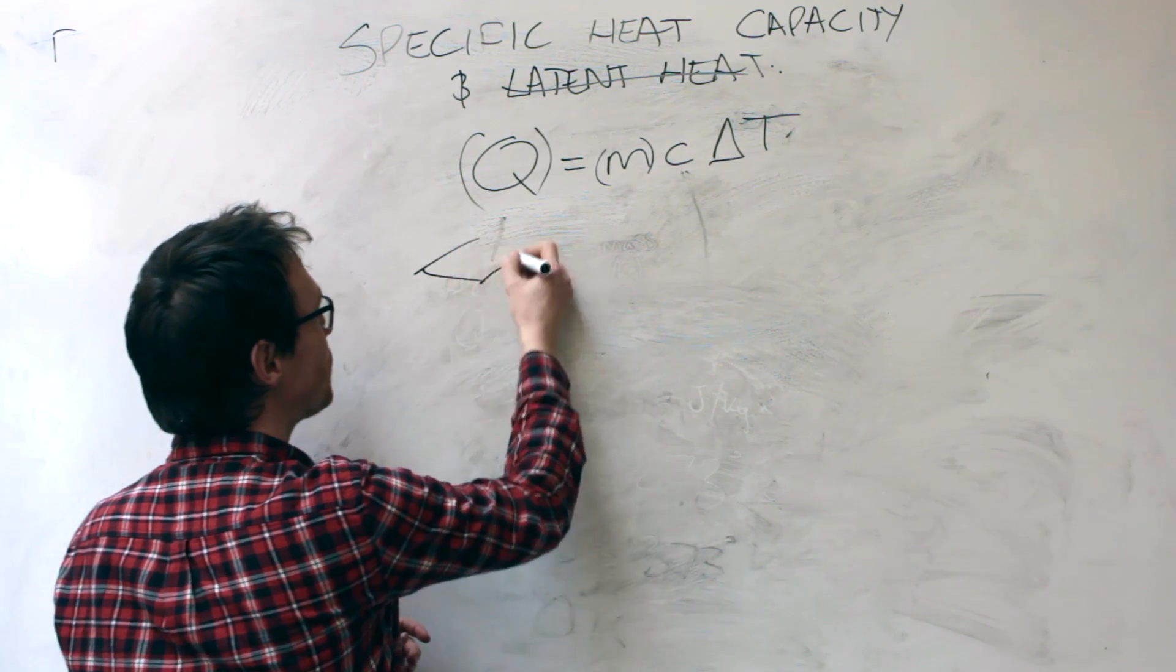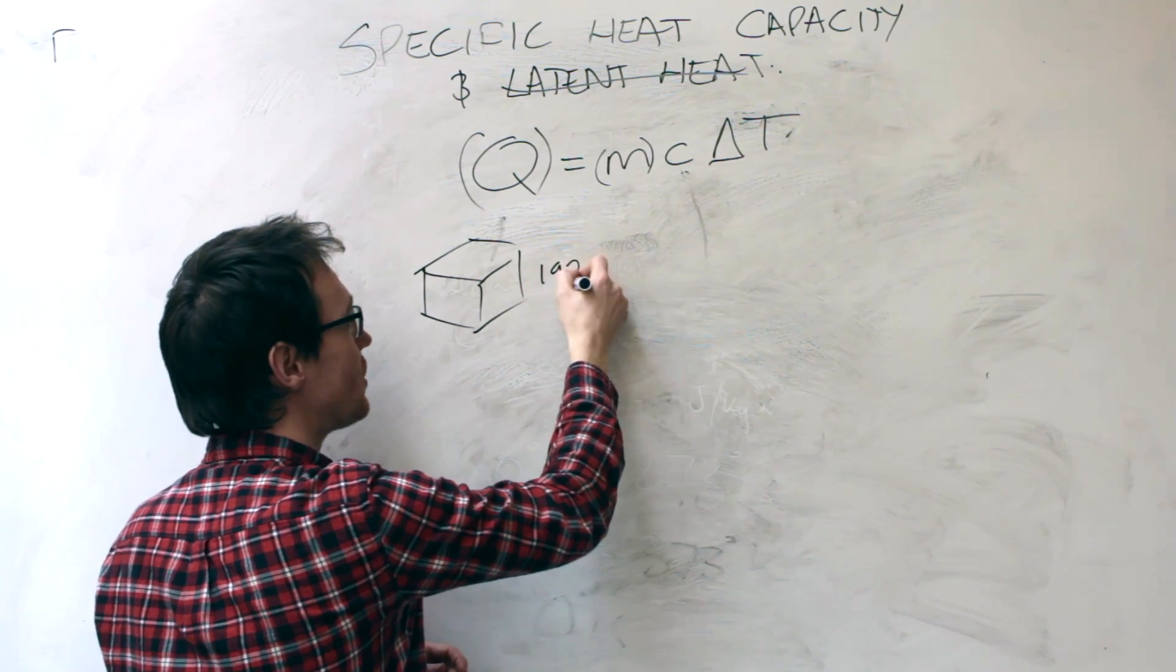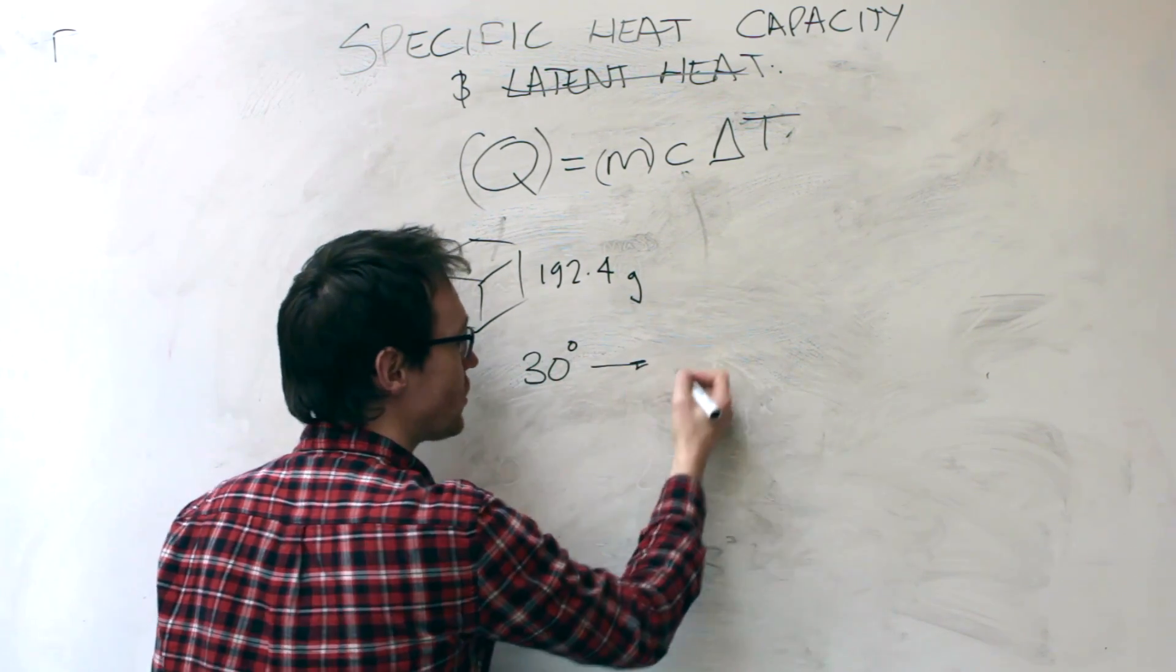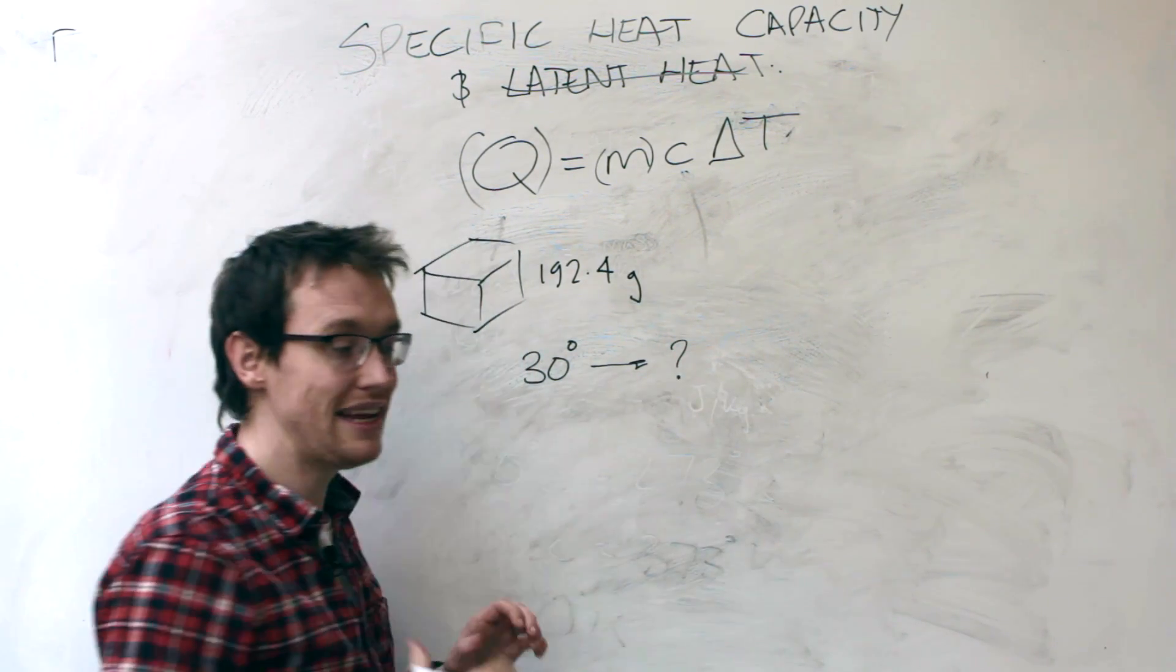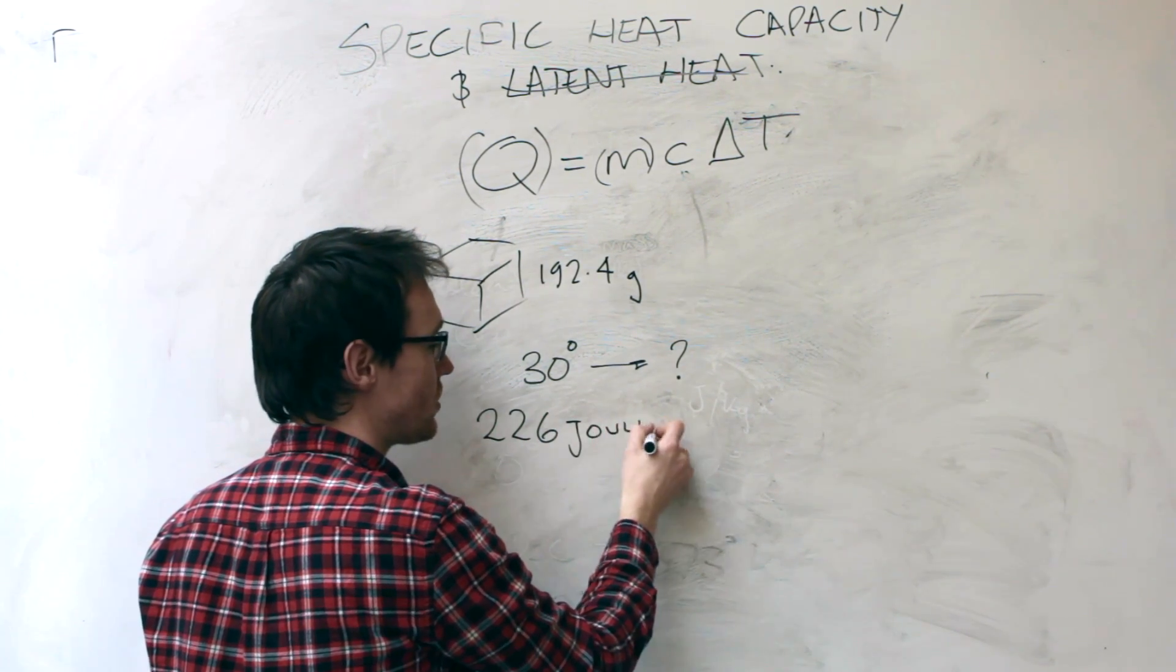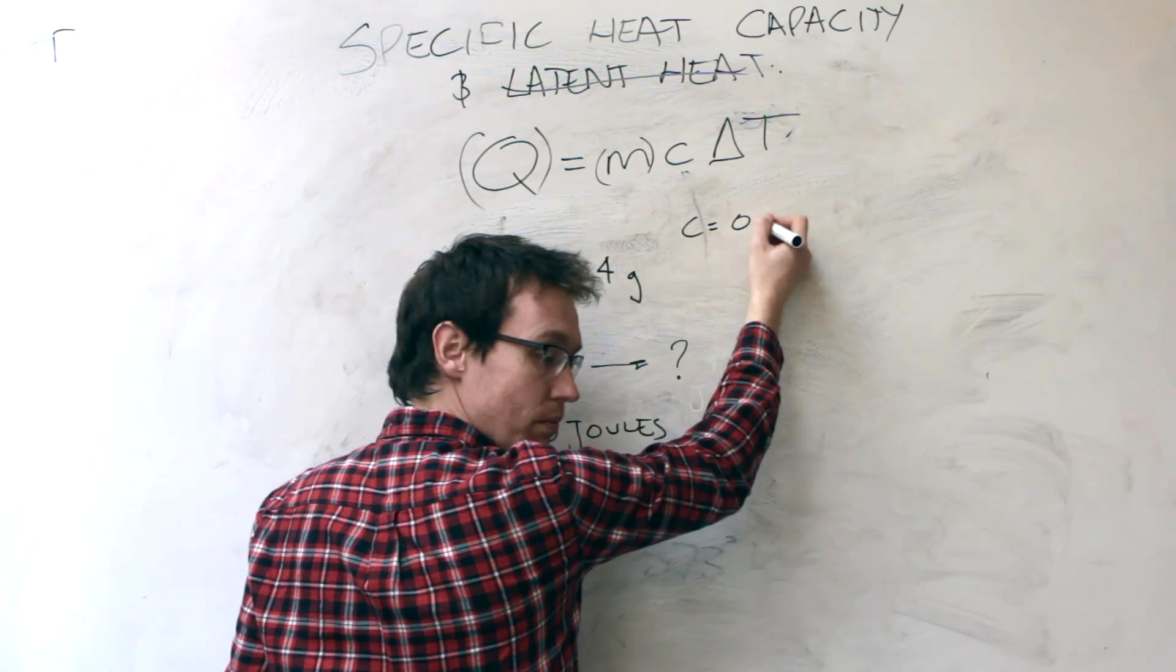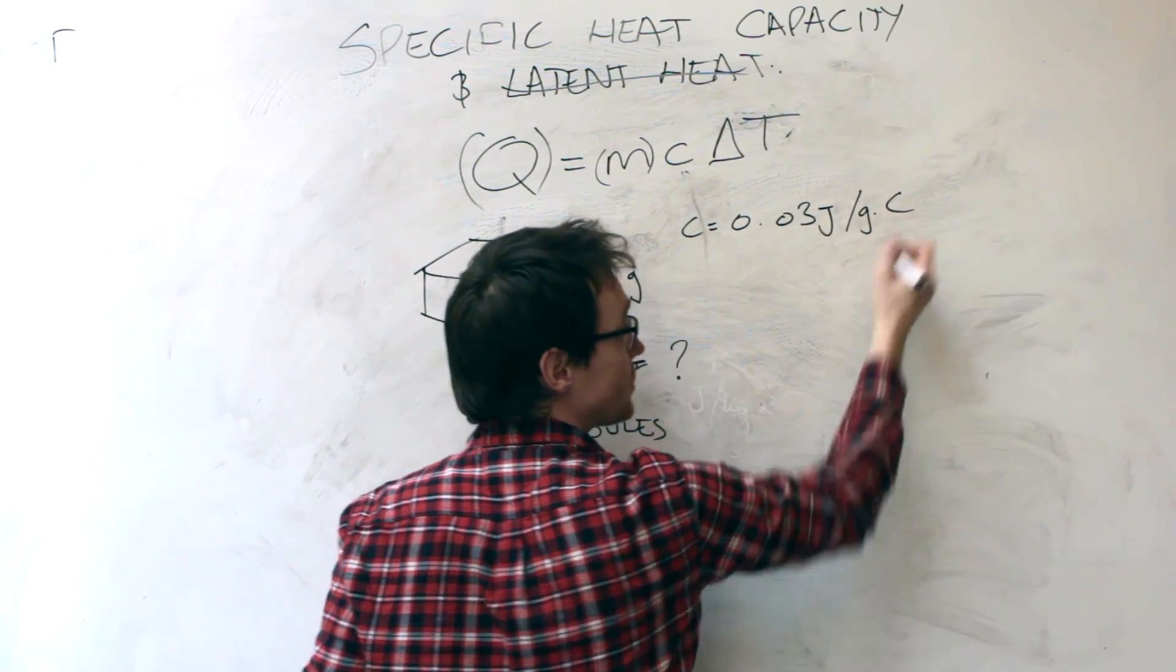And this cube of gold weighs 192.4 grams, and it's heated from a temperature of 30 degrees to some other unknown higher temperature. And in heating that, it took 226 joules to induce that temperature change, and the specific heat capacity of the gold is 0.03 joules per gram Celsius.